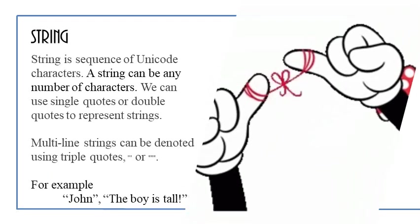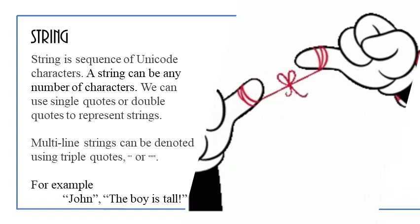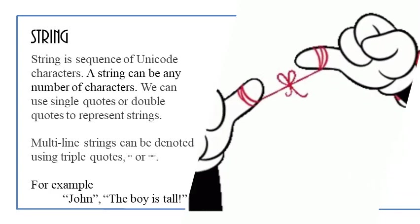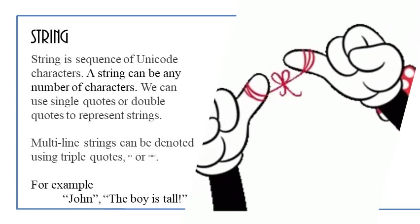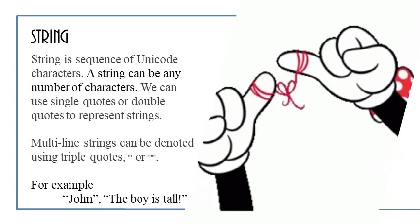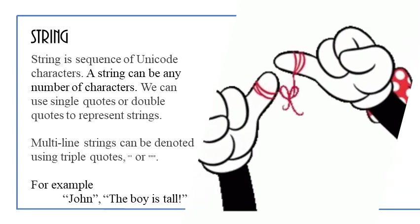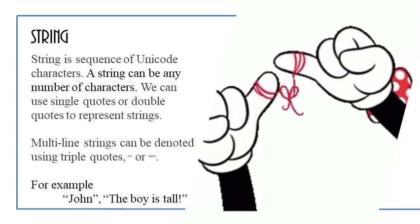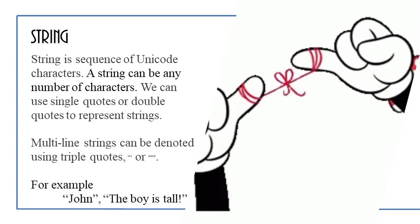Another data type is called a string. A string is a sequence of unicode characters. A string can be any number of characters. We can use single quotes or double quotes to represent your strings. Multi-line strings can be denoted using triple quotes. For example, notice so that I can place the word John, is not a character, it's a string of characters. I place the string of characters in double quotes. Again, you can also use single quotes. Another example, the boy is tall using the exclamation point. Again, I place this in double quotes because it is a string of characters.